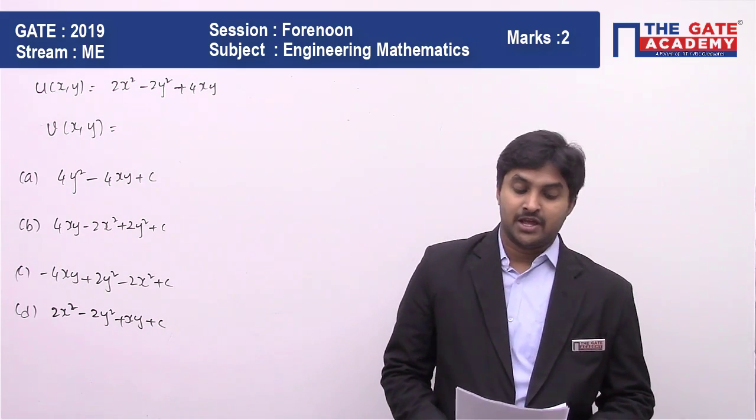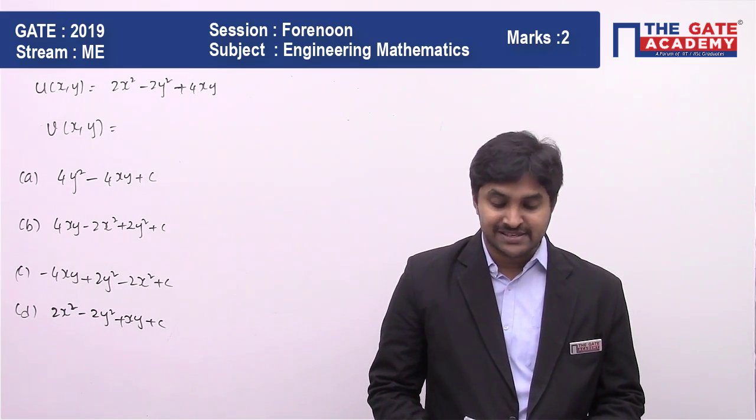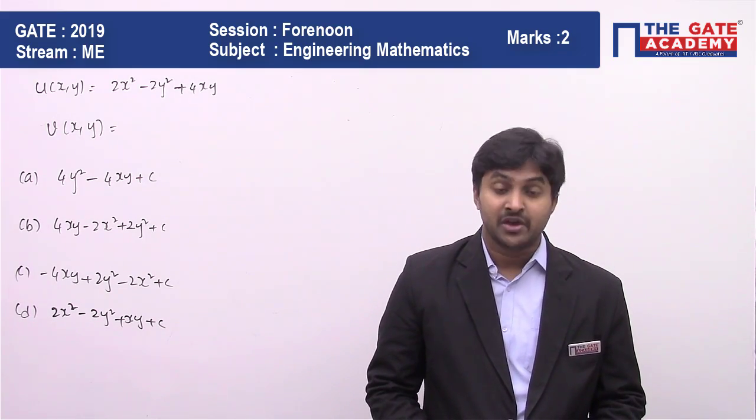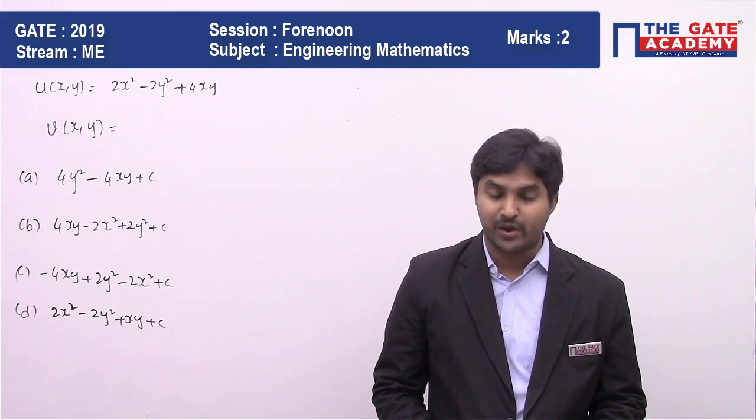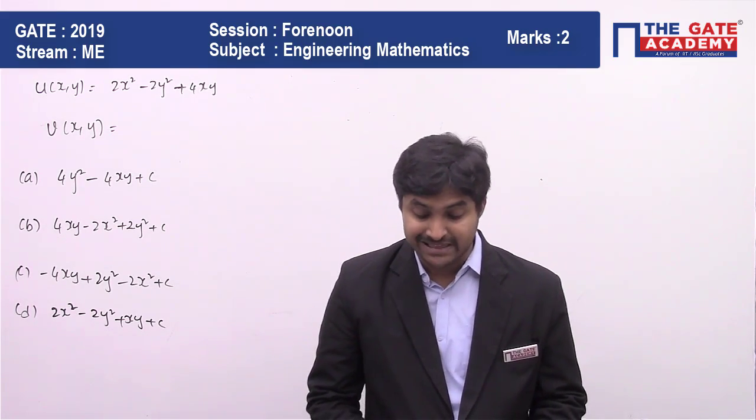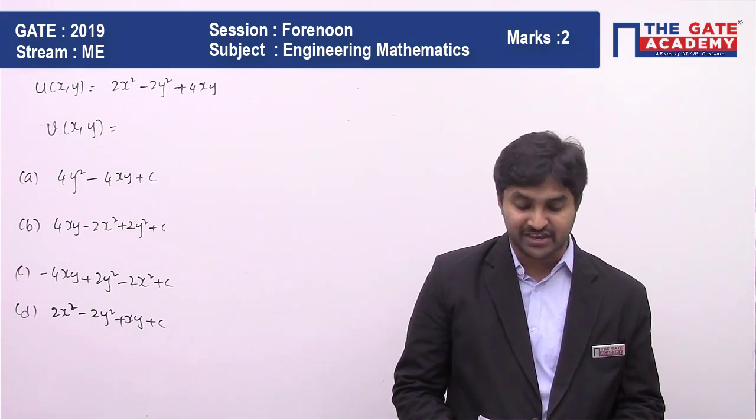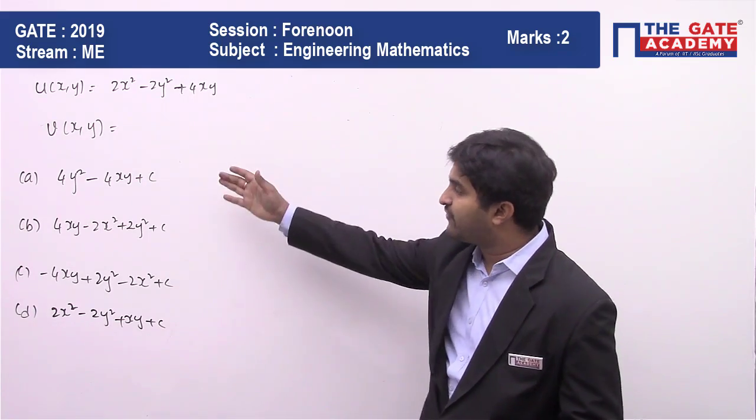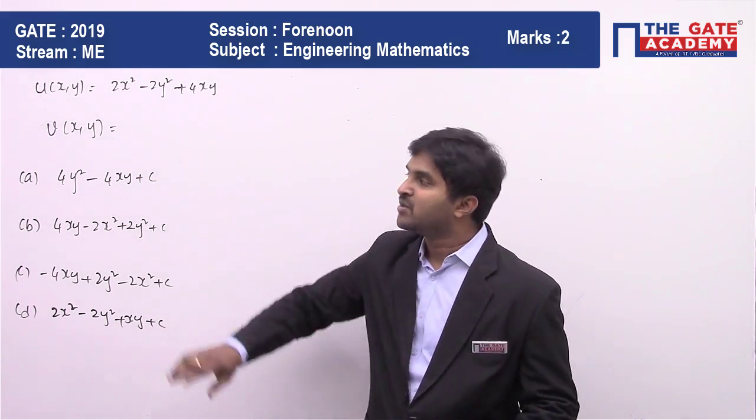First, let us read the question. A harmonic function is analytic if it satisfies the Laplace equation. If u(x,y) = 2x² - 2y² + 4xy is a harmonic function, then its conjugate harmonic function v(x,y) is? We have four options for v(x,y) provided u is already given to us. The best way to do this is option elimination.